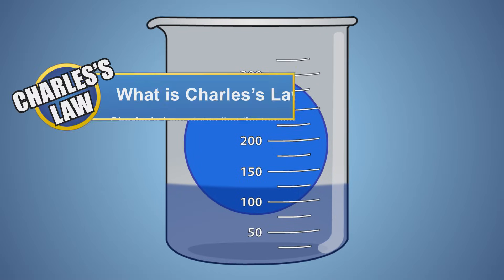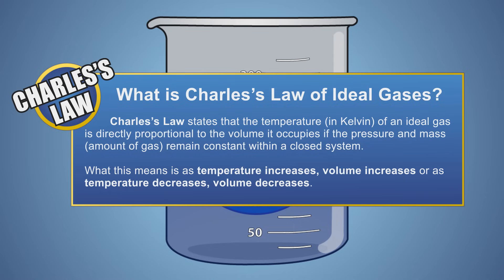Let's look at this experiment a little closer. Charles Gas Law states that, when a fixed amount or mass of an ideal gas is kept at a constant pressure and in a closed system, then its temperature and volume are directly proportional. What this means is, when temperature increases, volume increases. Or as temperature decreases, volume decreases.